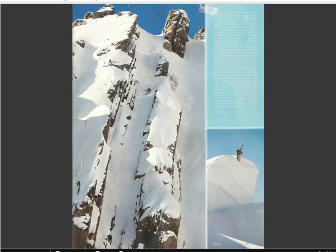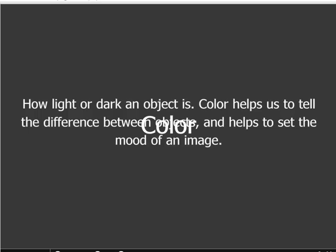The next principle is color and how color can be used to help the designer portray the feelings they're trying to convey. Color — how light or dark an object is — helps us tell the difference between objects and helps to set the mood of an image. Think back to that Jack Johnson album with the light teal and light red that felt so relaxing, just like his music. Think back to the Jimmy Eat World album with that really bright peacock feather — what did that tell us?